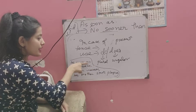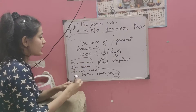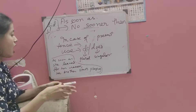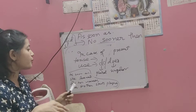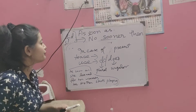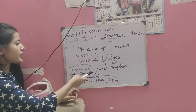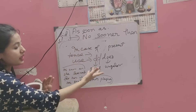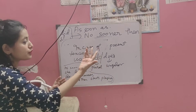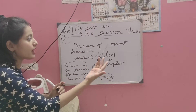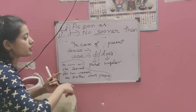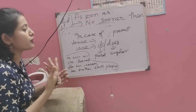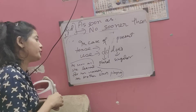And if the sentence is in the present tense — 'as soon as she leaves for her classes, her brother starts playing' — for such cases, we would have to use 'do'. If it's in plural form, you will have to use 'do'. If it's in singular form, you will have to use 'does'. Third person singular takes 'does', and third person plural, or first person, second person, would be 'do'.